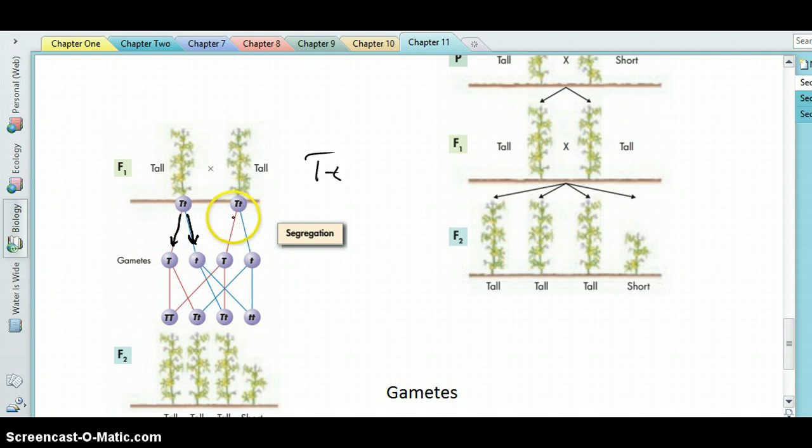And the same with the other parent, big T, little t. So what happens when all the gametes of these two parents get together? Well you'll see that you can make all possible combinations in those offspring. That is, you'll have some offspring that get big T, big T. Okay.